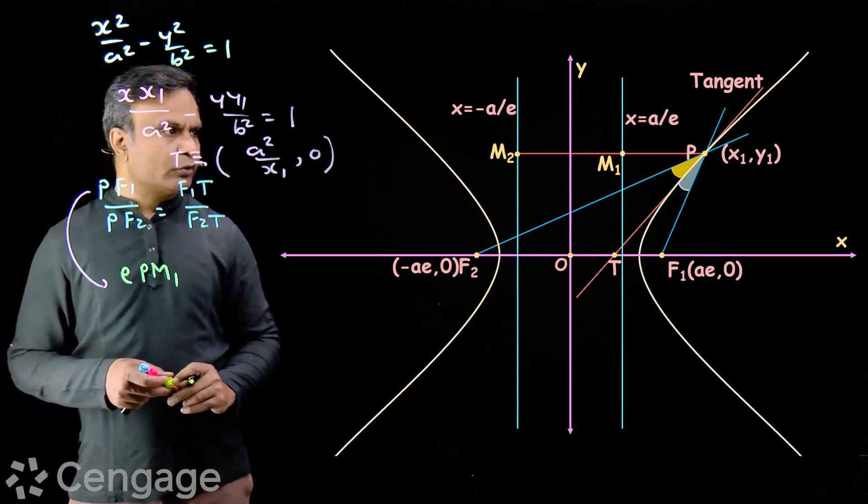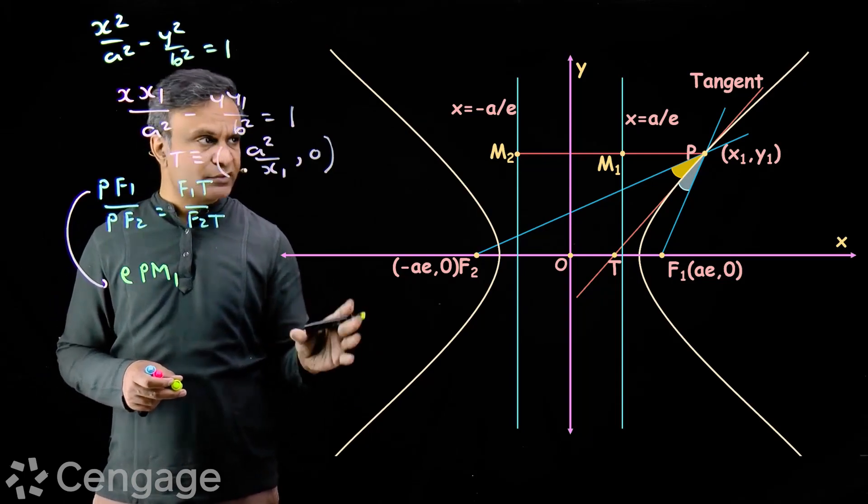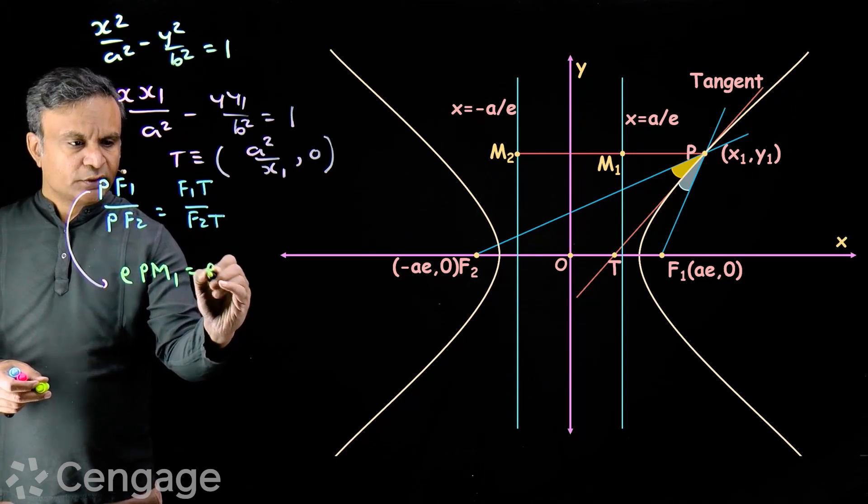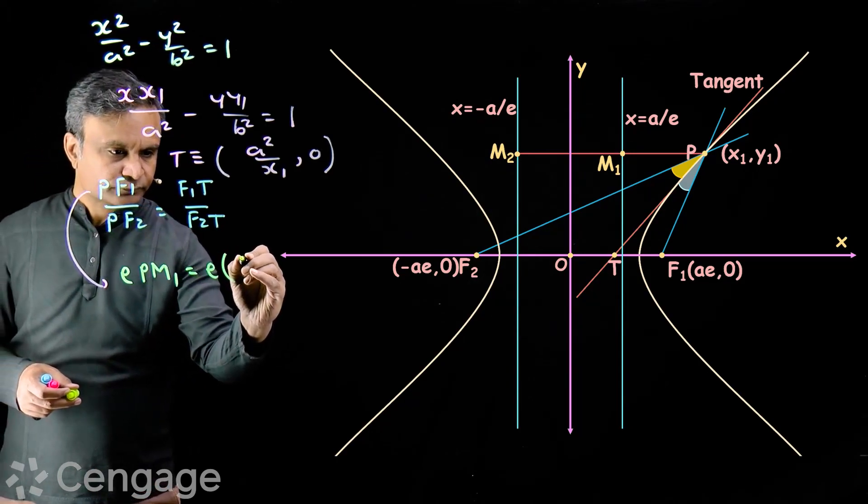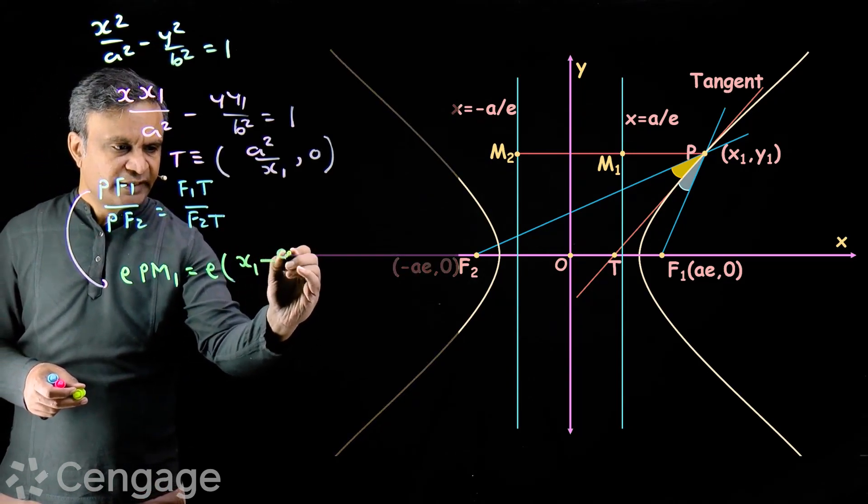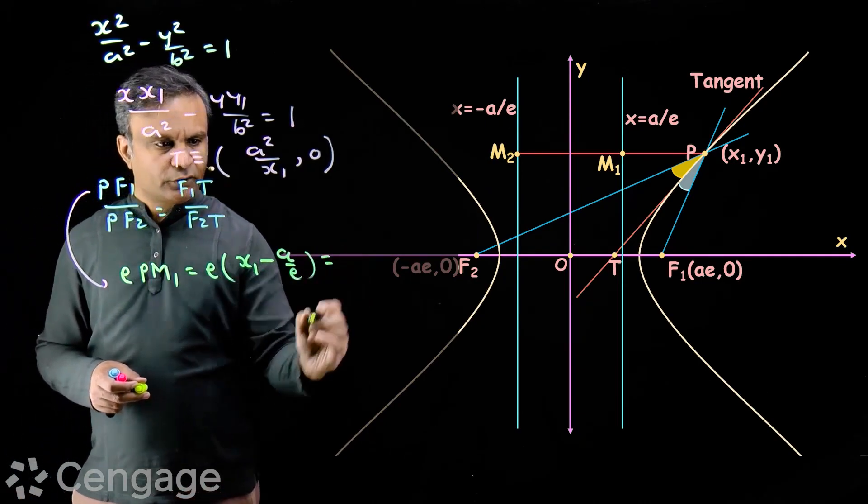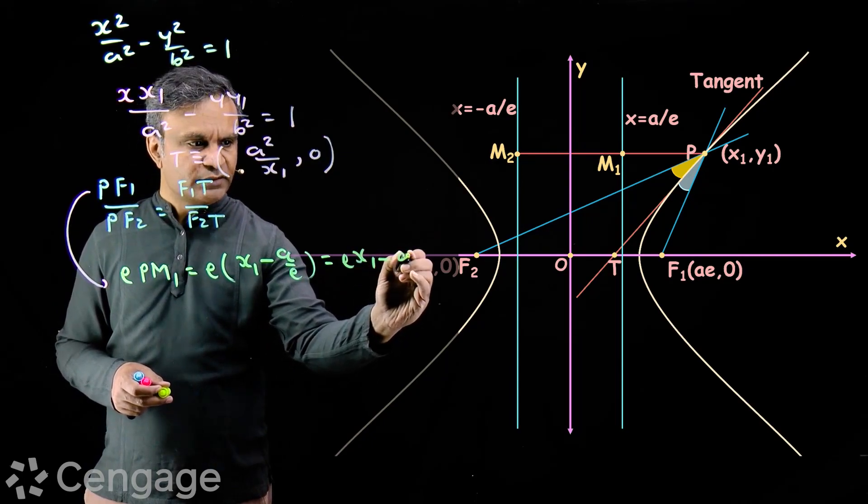Where M1 is foot of perpendicular from point P on the directrix x is equal to a upon e. PM1 is, what is PM1? It is x1 minus a over e. So, this is equal to ex1 minus a.